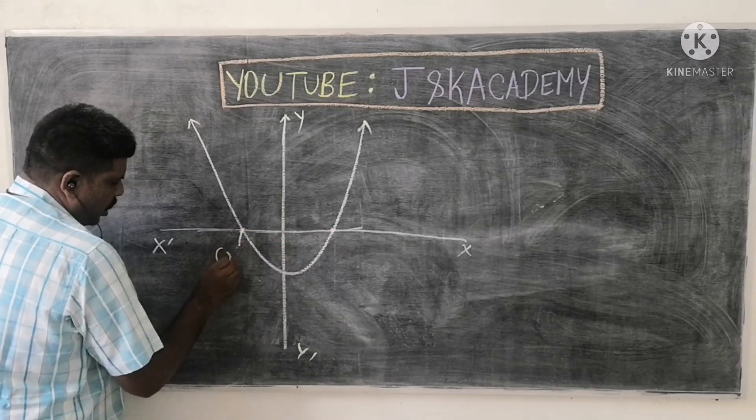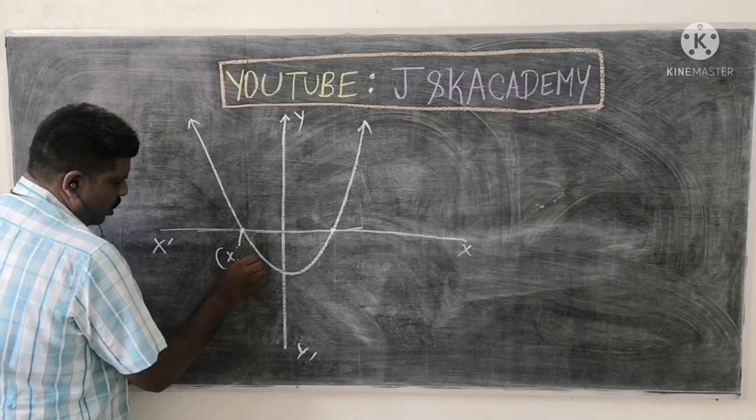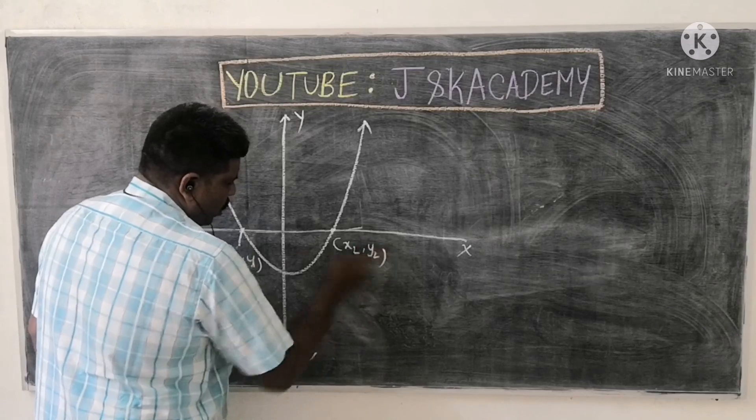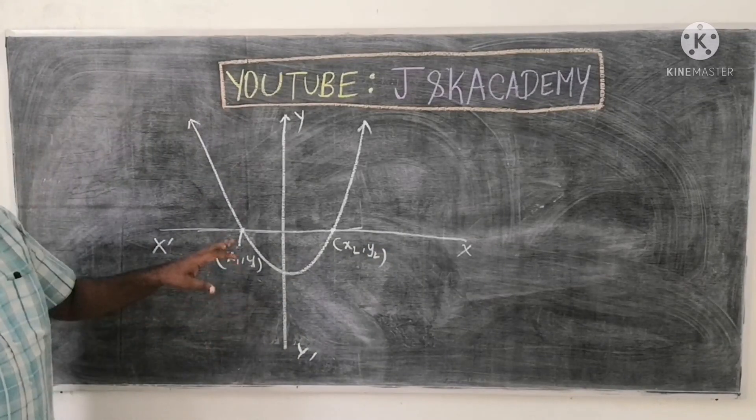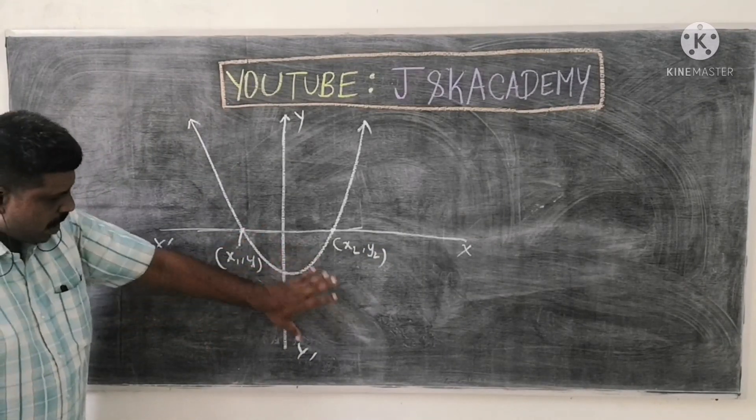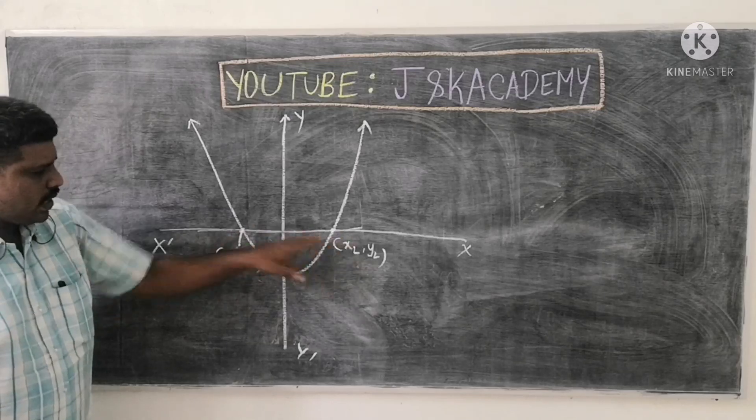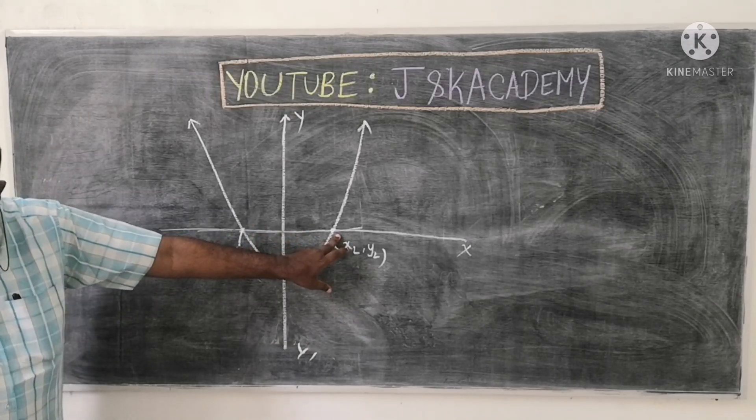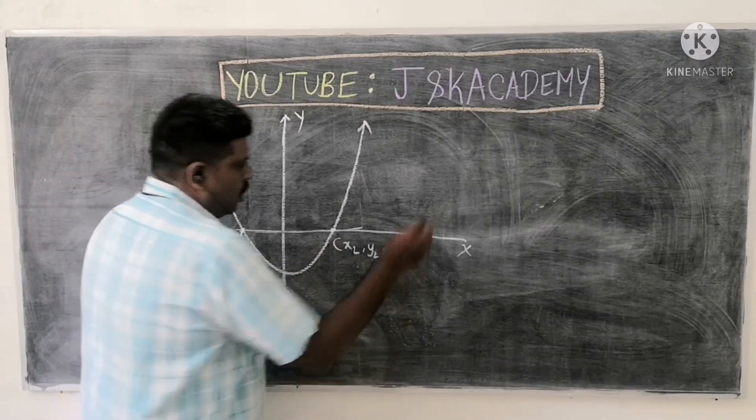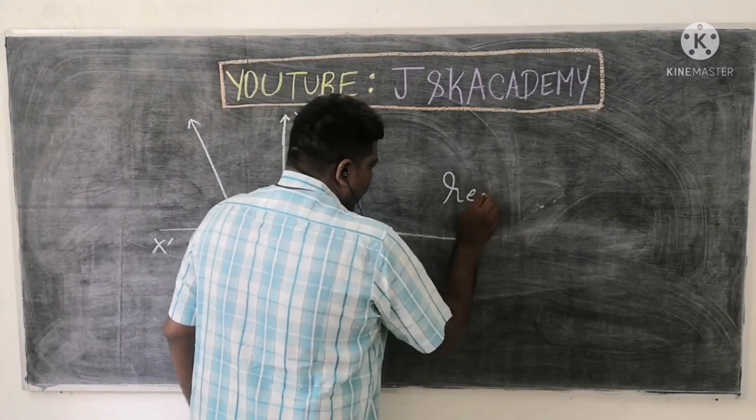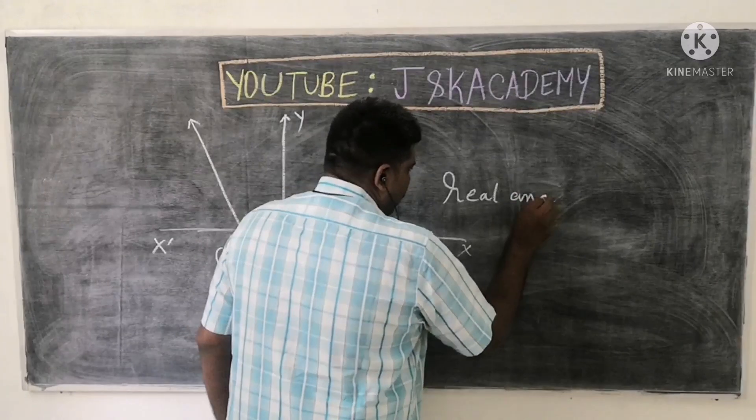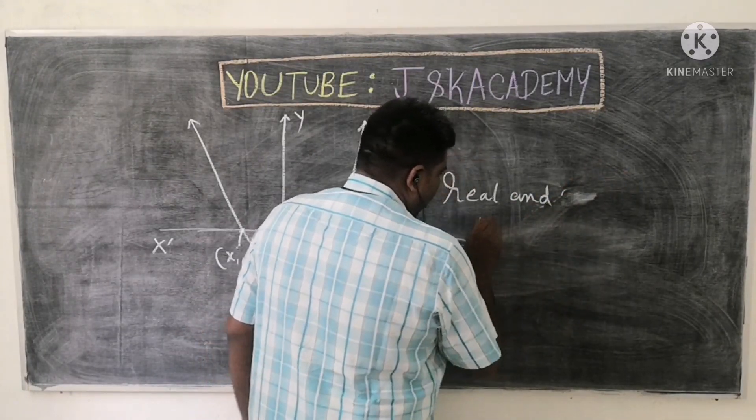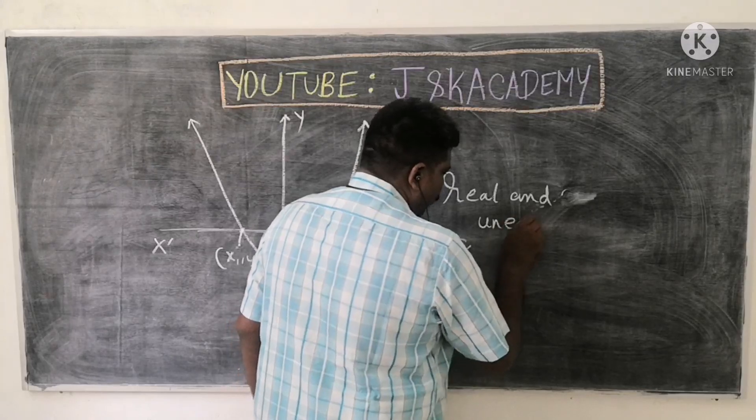So here is one point, here is one point. So here is x1, y1. Here is x2, y2. Here is one graph. So one graph you can see. In this way, forward, x axis, this is the two points cut or intersect. That is what you see. It will have real and unequal roots.